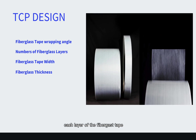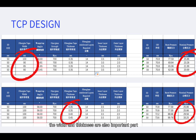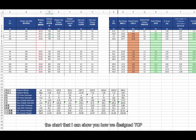Each layer of the fiberglass tape also impacts the entire TCP performance — more layers of fiberglass tape wrapped means a higher pressure class can be reached. The width and thickness are also important factors that impact the entire TCP pressure rating.